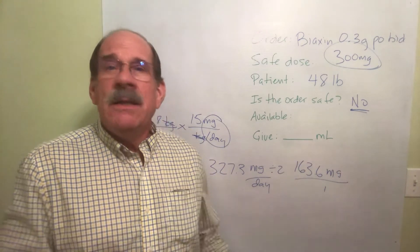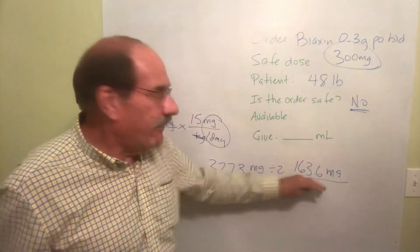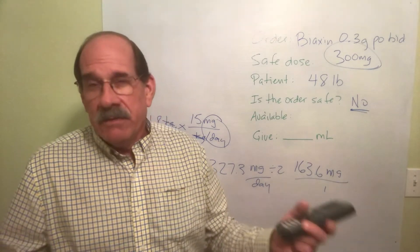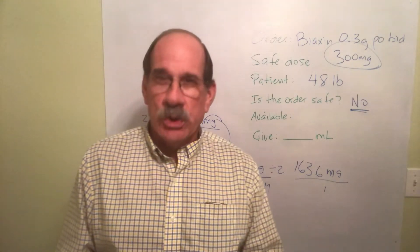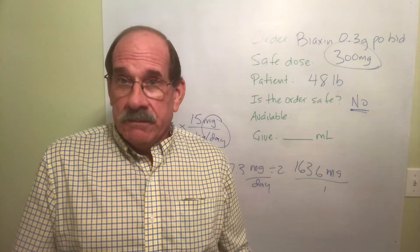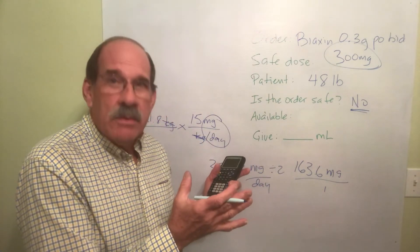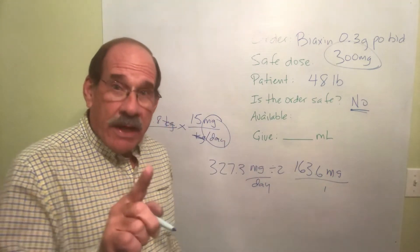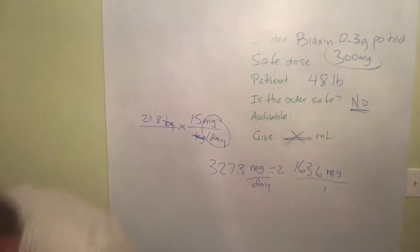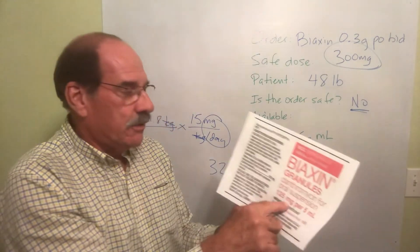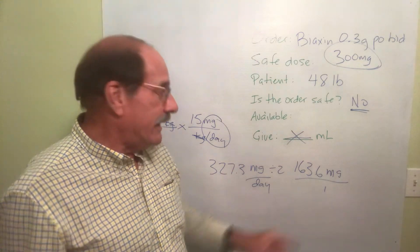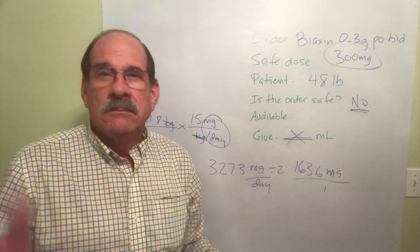Therefore, what do you give your patient? Nothing. You don't give this. You don't do anything. Stop right there. You call the doctor — or the NP or PA — and you find out what to do. Do you see what we're doing here? We have determined it's not a safe dosage. If you're asked how much to give on a test, leave it blank. The available amount, by the way, is 125 milligrams per 5 milliliters, but you don't even do your dosage calculation because you're not going to give this. You're not going to give anything.